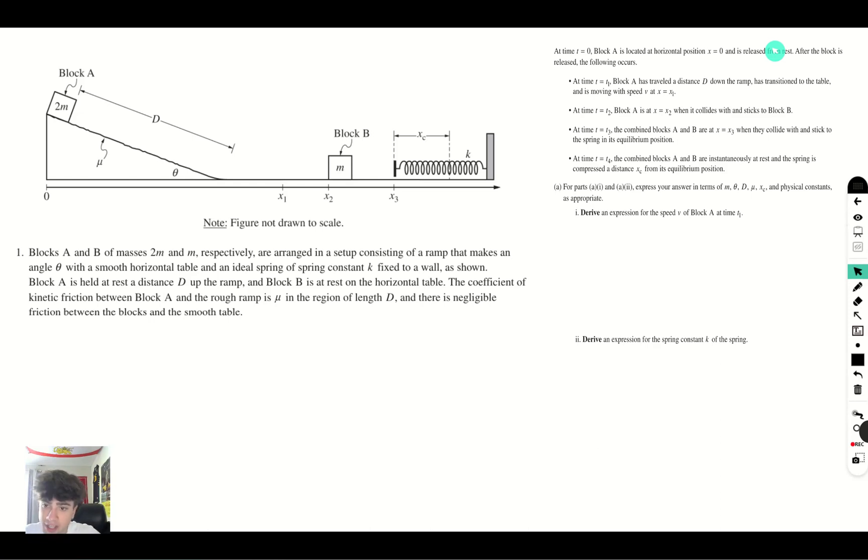Let's get straight into the problem part A1, where it is asking us to derive an expression for the speed v. The way that we're going to solve this is using energy. We see that the energy that block A has here is going to be its potential energy, which is mass times height times gravity. Its mass is 2m, the gravity is just g, and the height is going to be the vertical component of D, which is D sine theta.